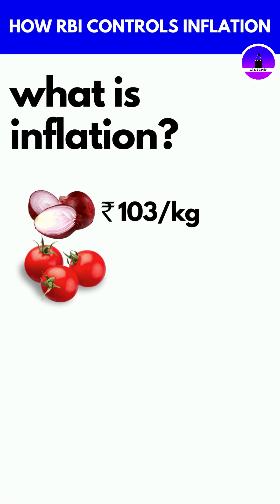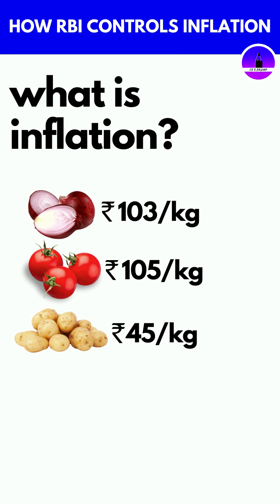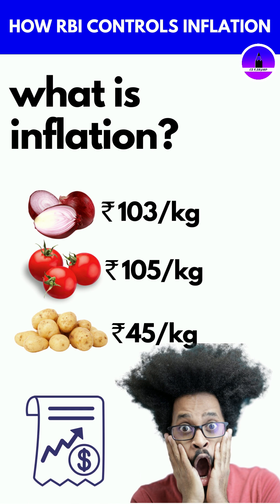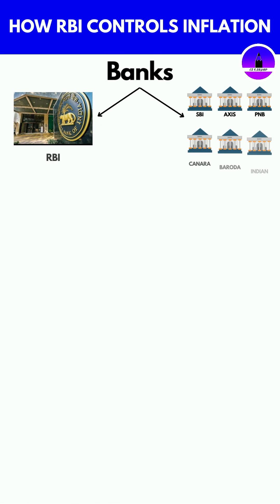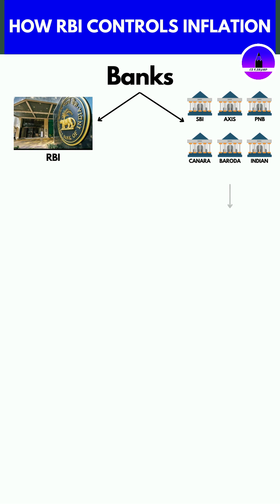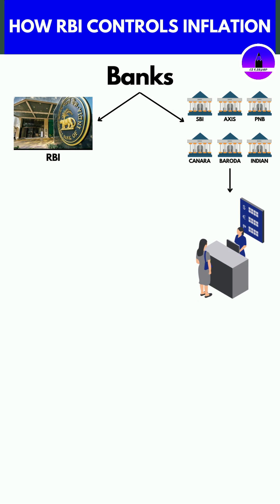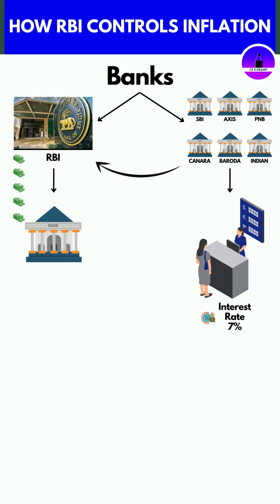What is inflation? It is a situation when we find everything and anything very expensive. To understand the root cause, you have to understand the role of banks. When we need money, we go to the commercial bank — they lend us money at an interest rate, say seven percent. When commercial banks need money, where do they go? They go to the RBI, which lends them money at an interest rate known as the repo rate.